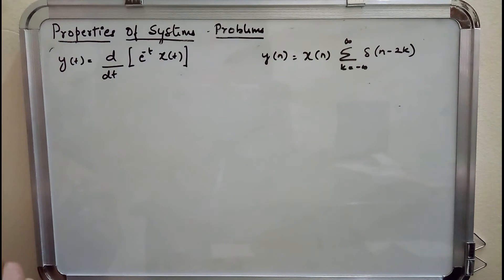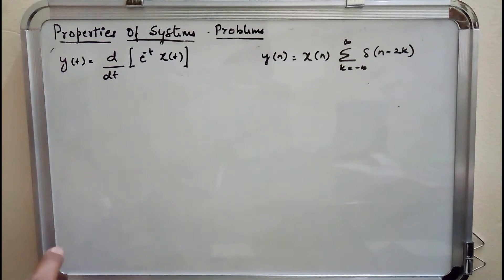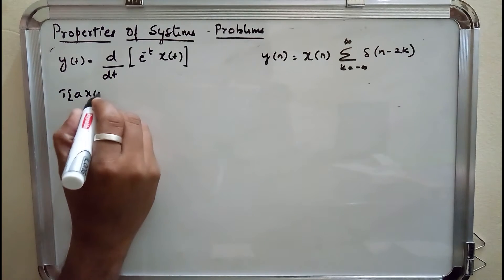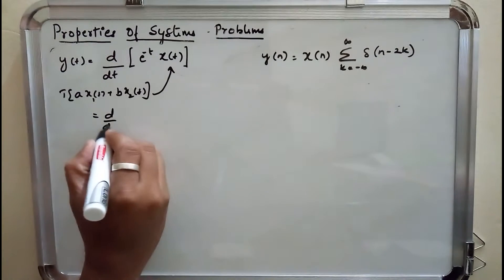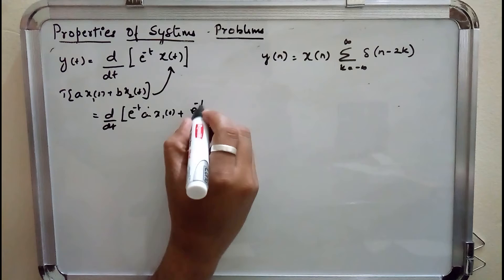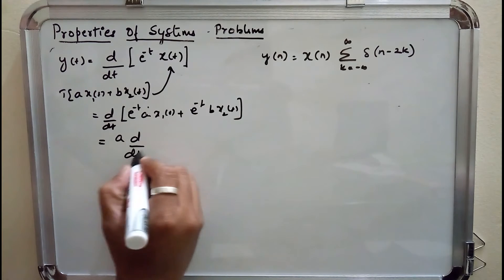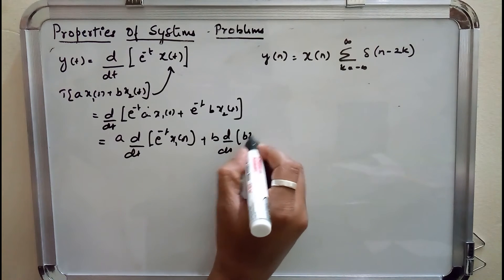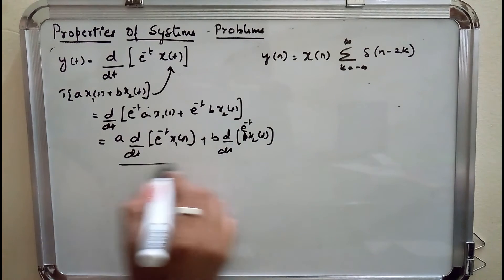The first criteria for linearity is if the input is a weighted sum of two or more signals. If input is a·x1(t) + b·x2(t) and I replace that here, I get d/dt of [e^(-t)·a·x1(t) + e^(-t)·b·x2(t)], which becomes a·d/dt[e^(-t)·x1(t)] + b·d/dt[e^(-t)·x2(t)]. So the system is linear in nature.